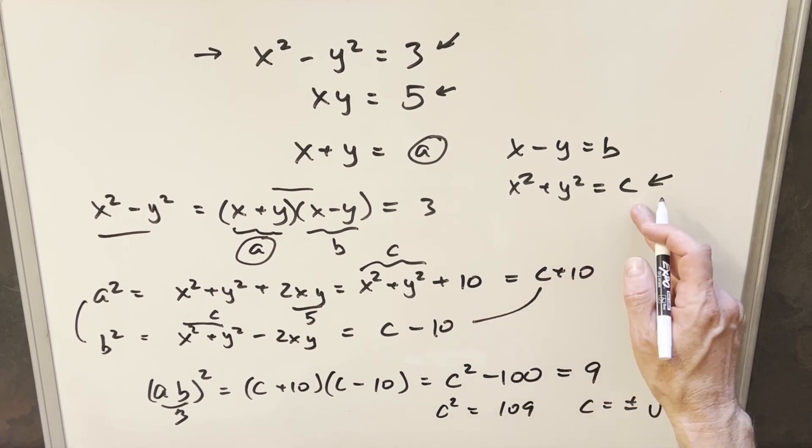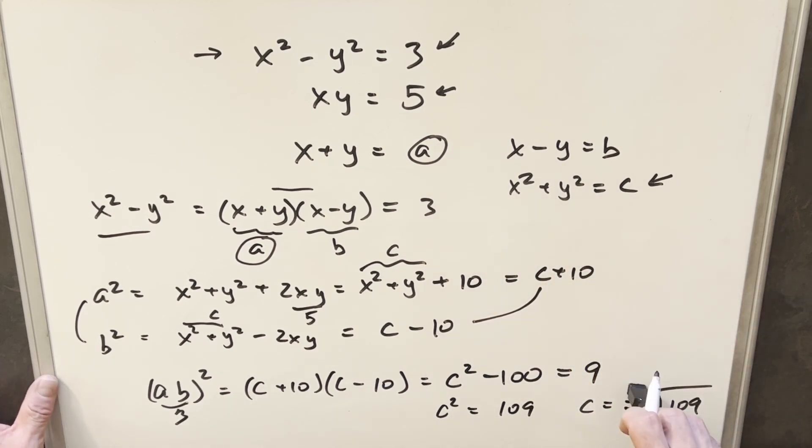Just noticing that both these terms are squared, c is going to always be positive. So we can remove the plus or minus here and just say that this is going to be the positive square root of 109.